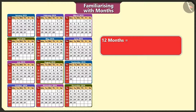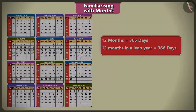If we add all the days of the 12 months it makes a total of 365 days. And if we add all the days of the 12 months in a leap year, then the total number of days is 366.